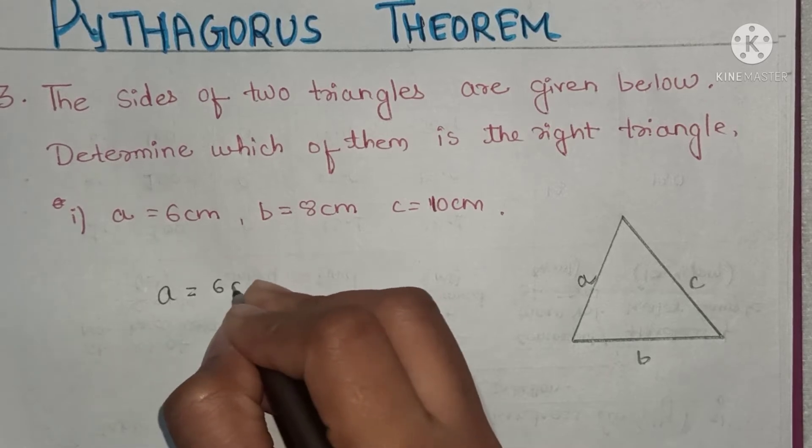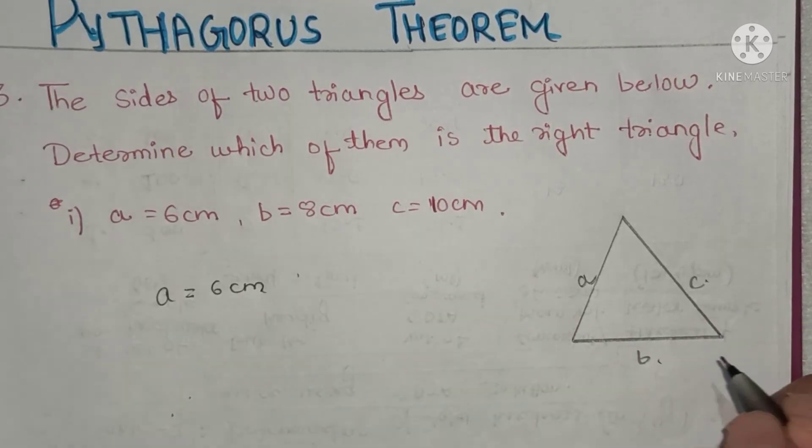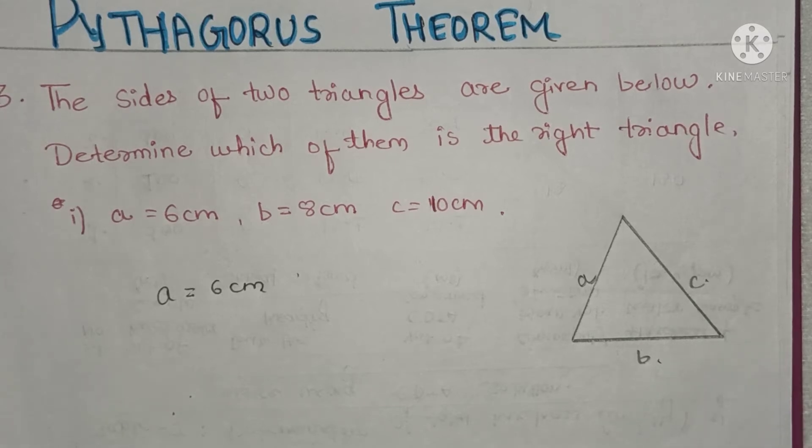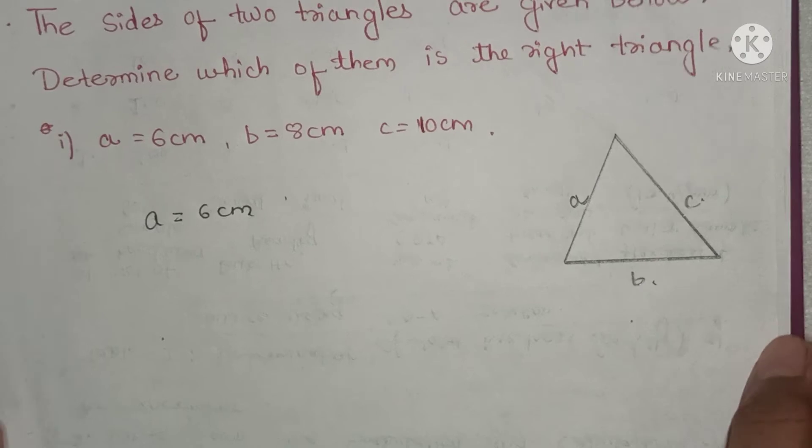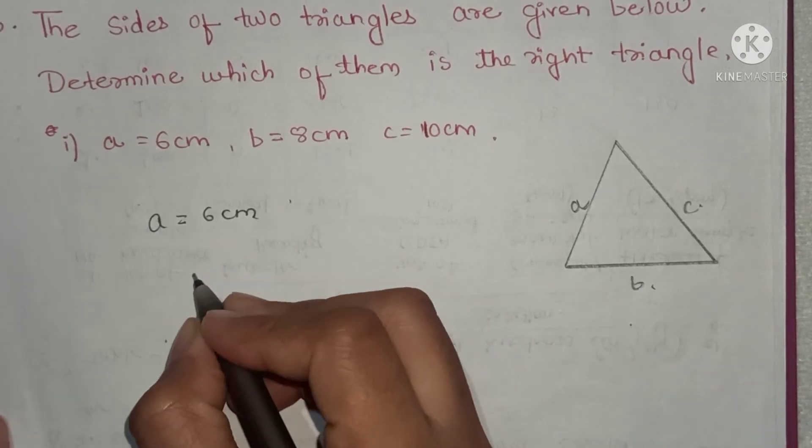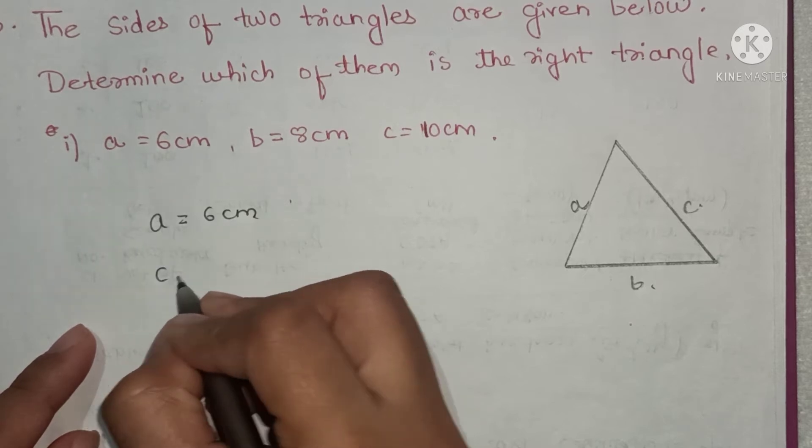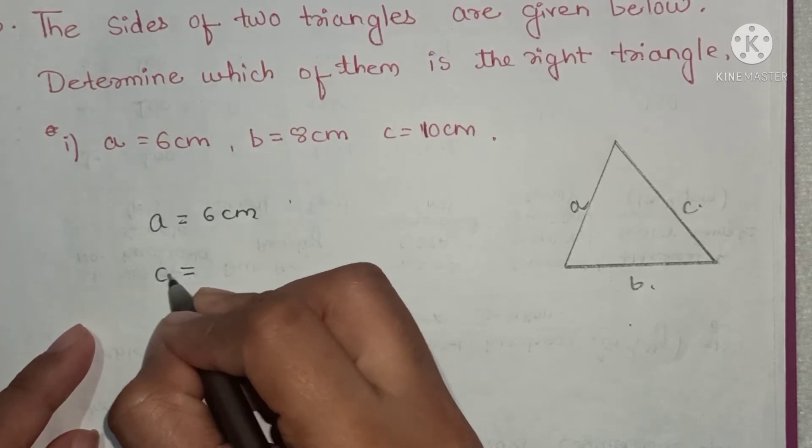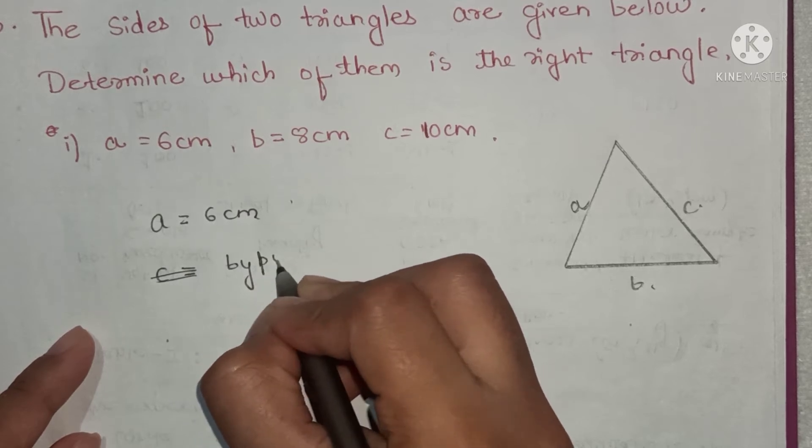Now we have to determine whether this forms a right triangle or not. We know that the longest side is called the hypotenuse. C is the longest, so c will be the hypotenuse. By Pythagoras theorem...